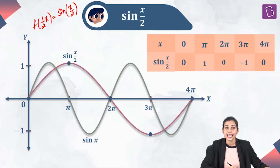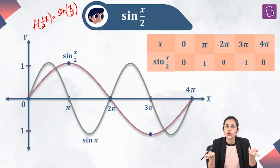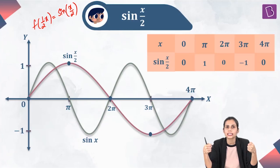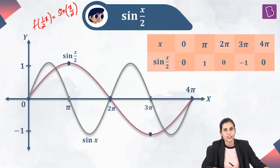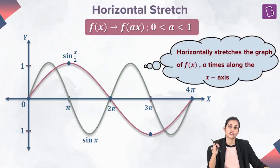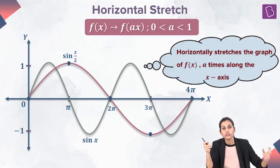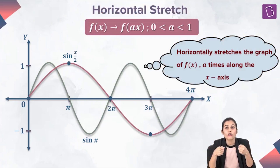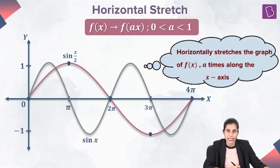Now you have both graphs in the same Cartesian plane — the green one is sin x and the pink one is sin(x/2). In the interval 0 to 2π, the green graph completes one cycle, whereas the pink graph has only completed half a cycle. In 0 to 4π, the green completes two cycles while the pink completes only one. This means if you take sin x and stretch it horizontally along the x-axis two times, you get sin(x/2). This observation is valid for every function f: stretching f(x) horizontally by a times gives f(ax) where a is between 0 and 1.